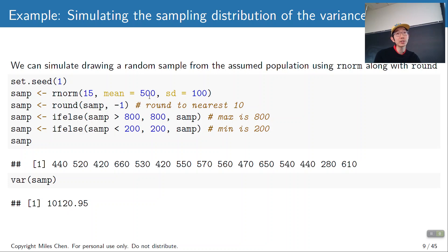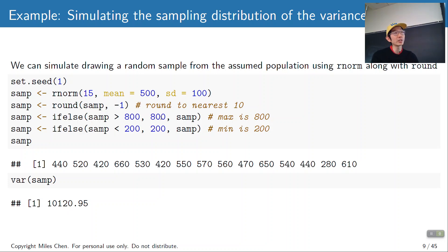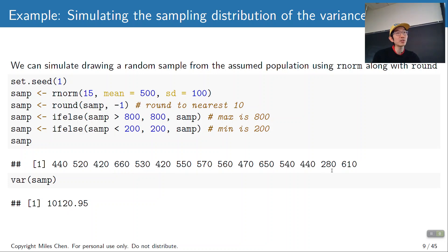If we don't remember chi-squared, we can still simulate the sampling distribution. Here I'm going to draw one random sample of 15 values from a normal distribution using rnorm. I'll get 15 values with mean 500, standard deviation 100, then use round with negative one to round to the nearest ten. If any values are over 800, replace with 800; if any are less than 200, replace with 200. In this particular sample, none of the values were over 800 or under 200. The variance of this sample comes out to around 10,120, which is in line with 100 squared.